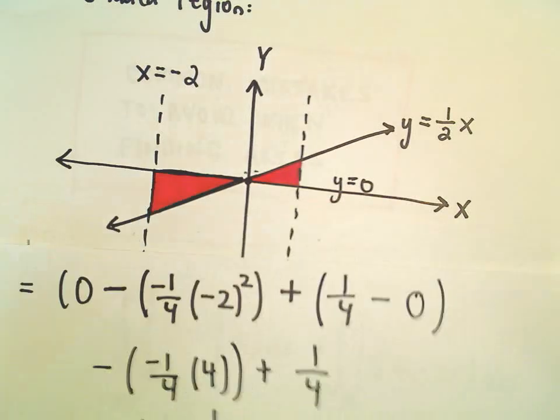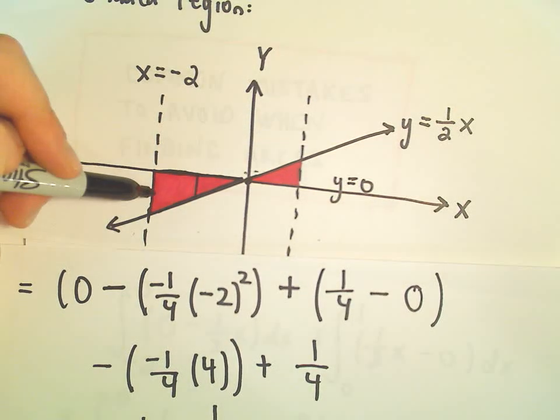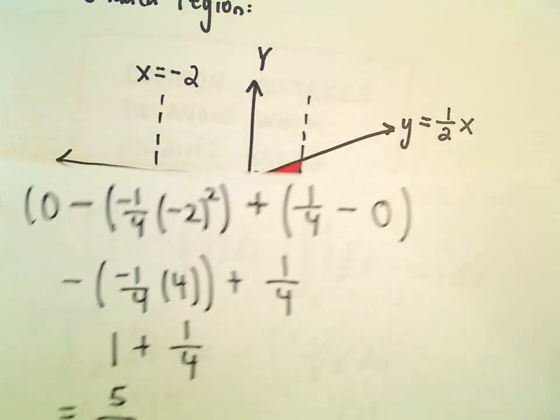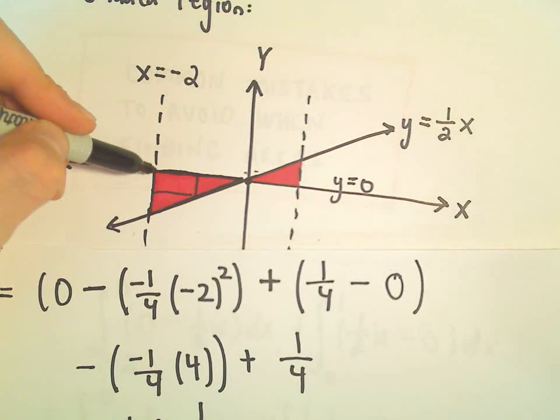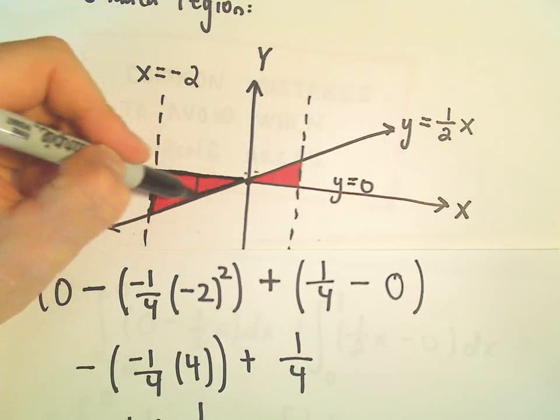I guess you could have even used a little geometry if you were careful. But that seems like way overkill to find. Well, I actually take that back. Obviously, you could probably do the area of this one pretty quickly. There's areas of triangles, right? So you could do 1 half base times height.